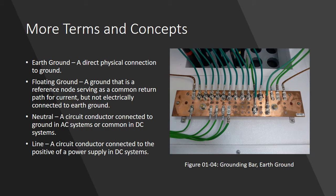Equally important for lightning protection is floating ground. A floating ground is a ground that is a reference node serving as a common return path for current but not electrically connected to earth ground.